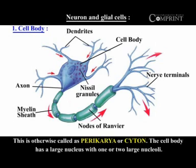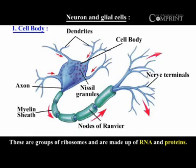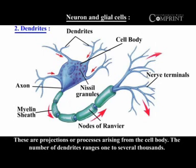Cell body. This is otherwise called perikaryon or cytons. This cell body has a large nucleus with one or two large nucleoli. The most characteristic feature of the cell body is the presence of large granules in the cytoplasm called Nissl granules or Nissl substances. These are groups of ribosomes and are made up of RNA and proteins. The cell body is the center for all the synthetic activity of the neuron.